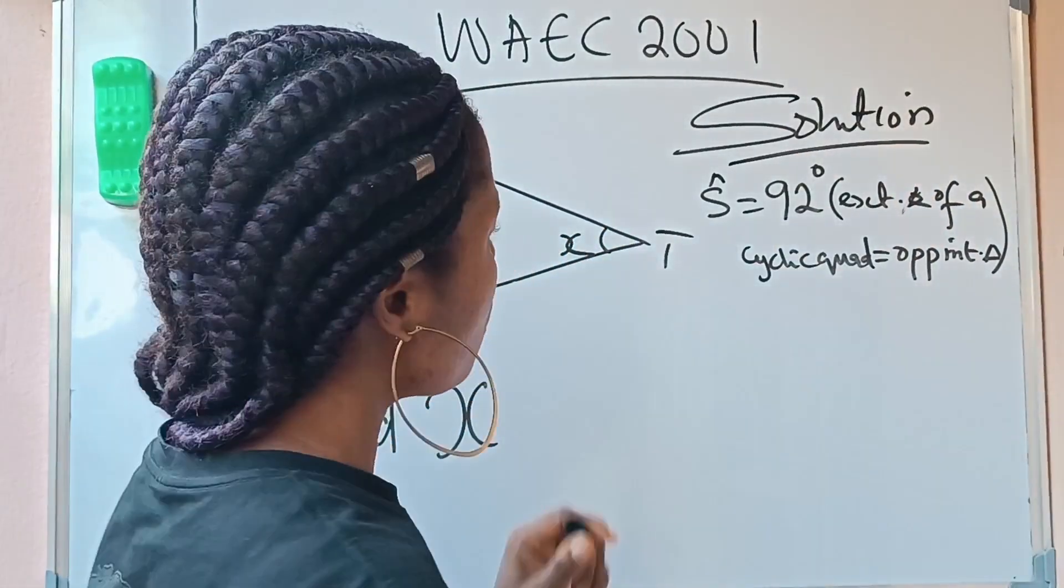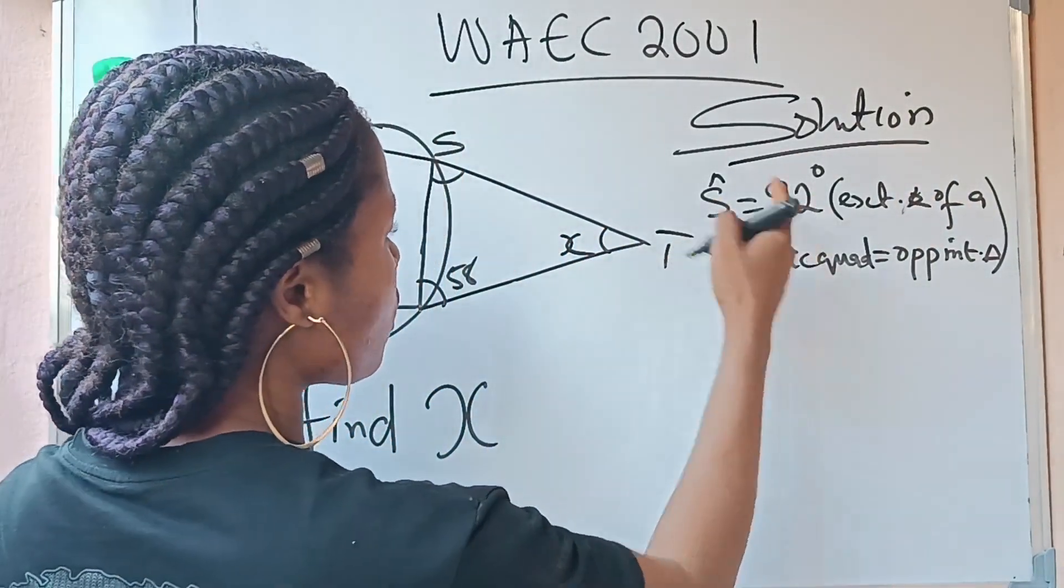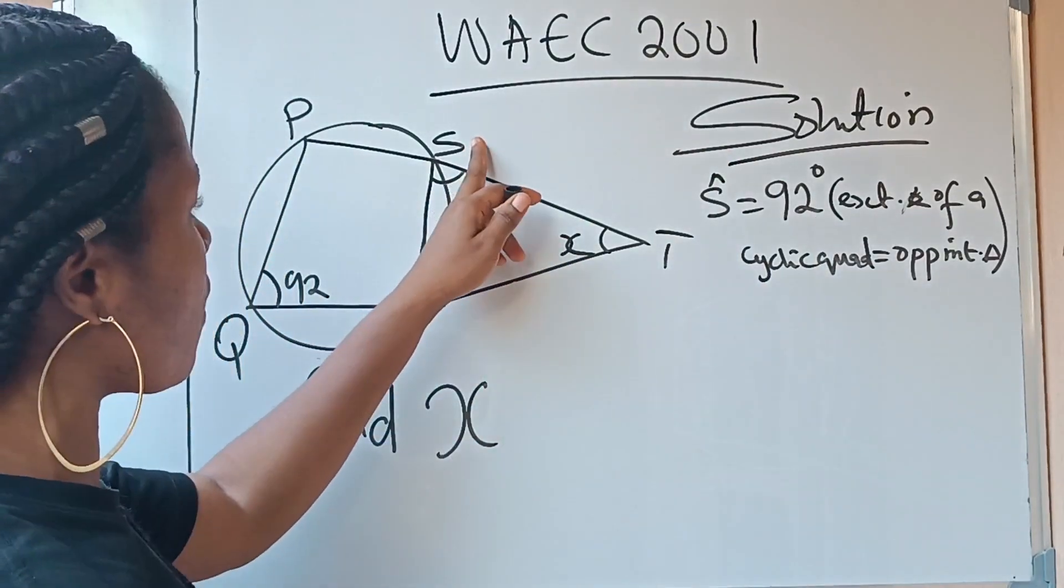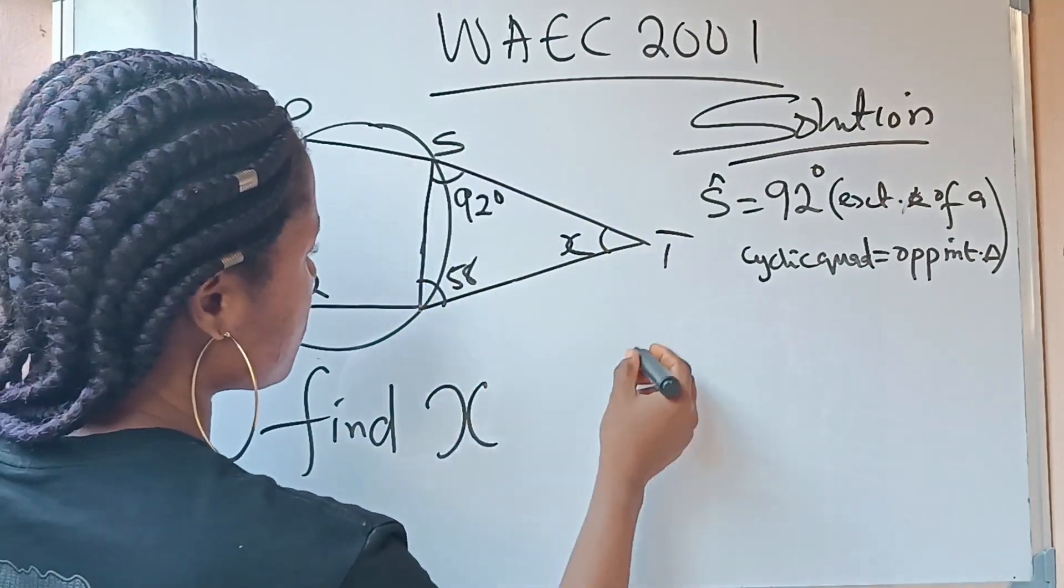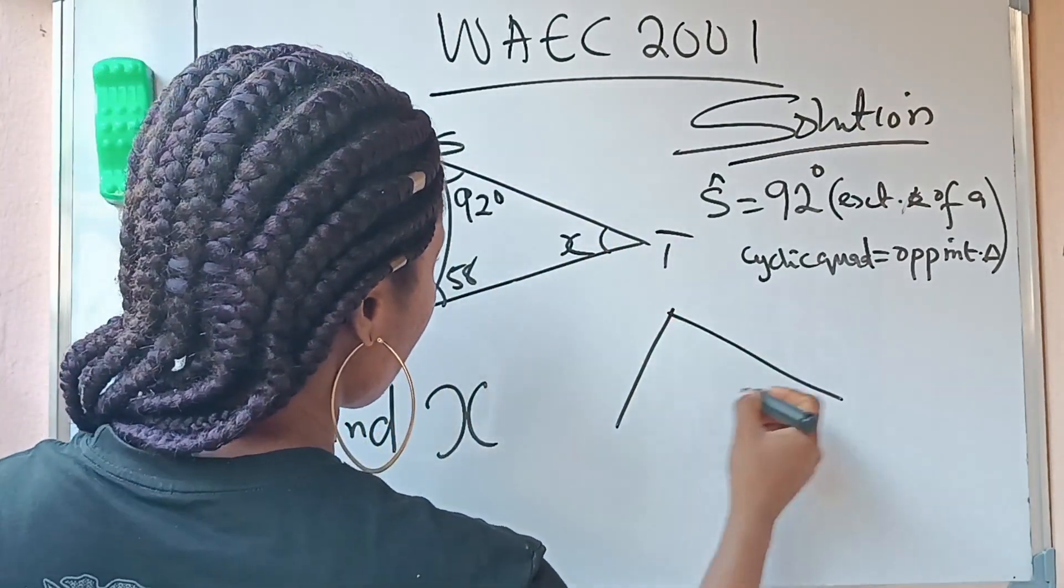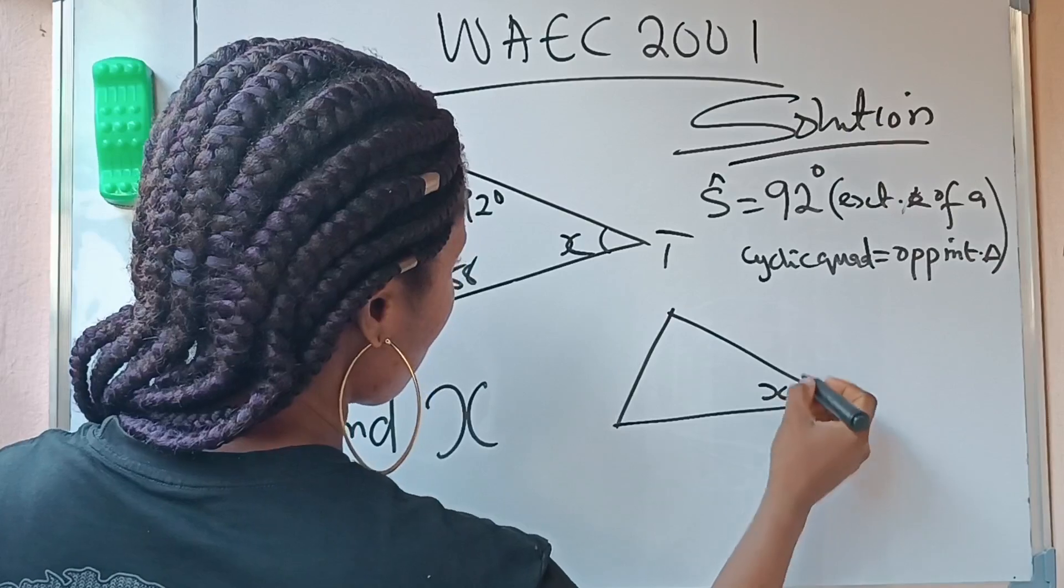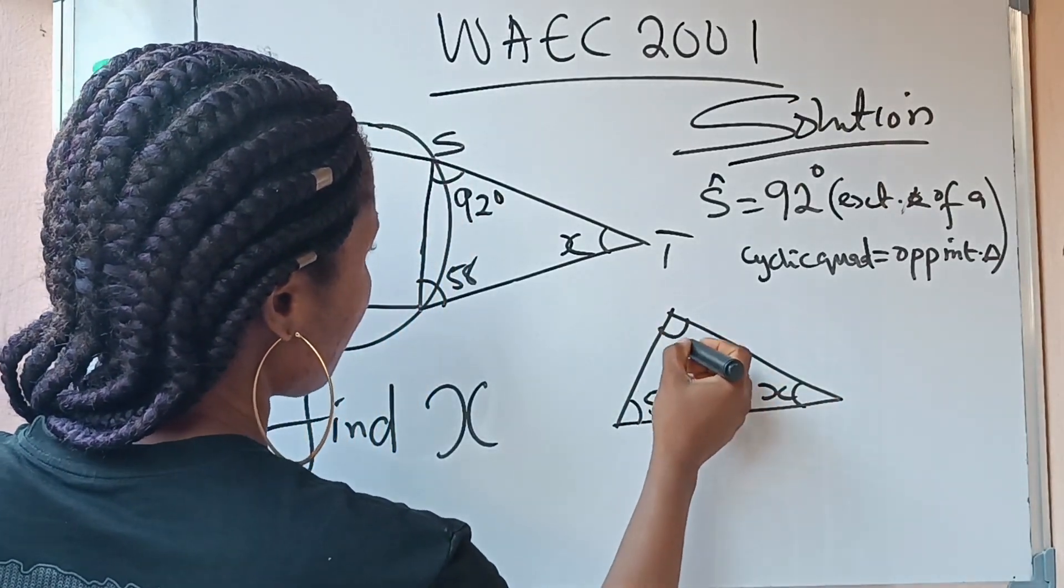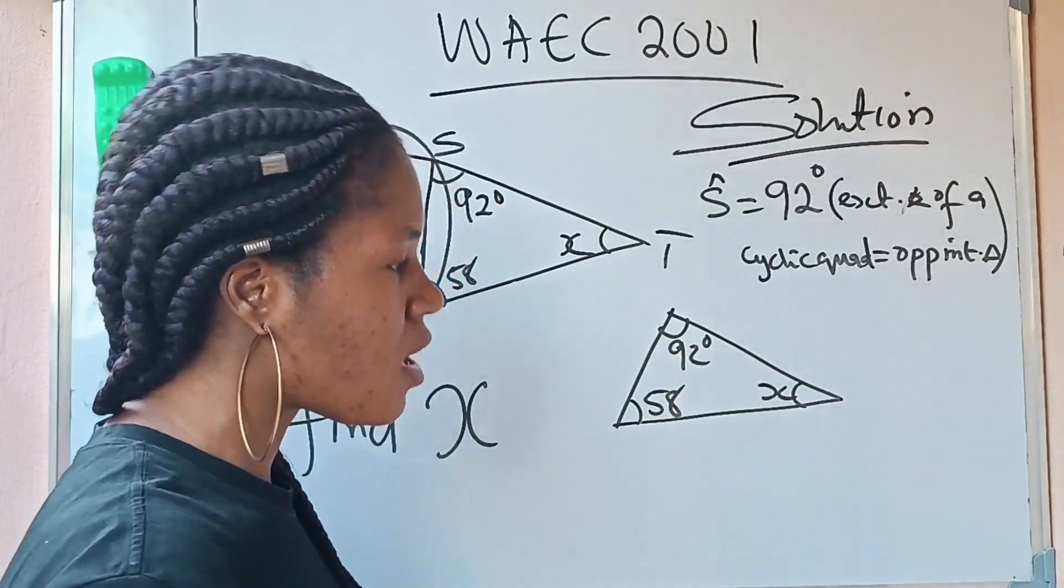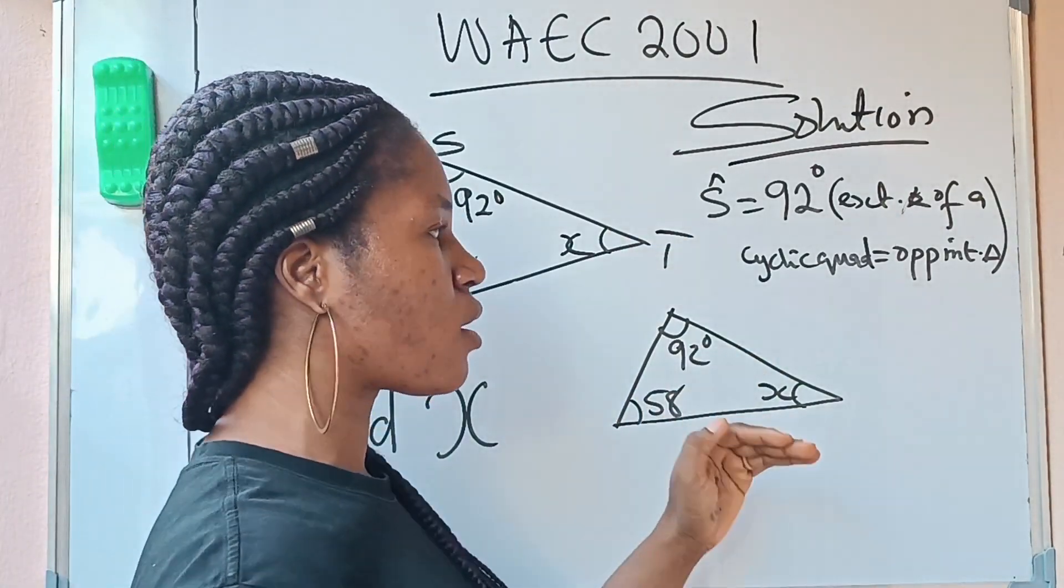Now we have that exterior angle is equal to the opposite interior angle. That means our S is 92 degrees here. So if you look closely here, you are going to see that what we have now is something like this. This is the X you are looking for. This is 58. And this is 92 that we got. And we are looking for X. Now the answer is very close.